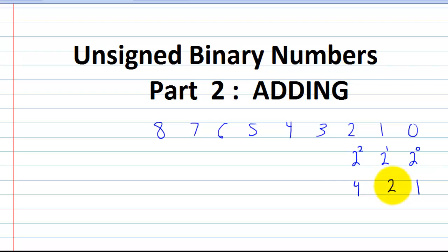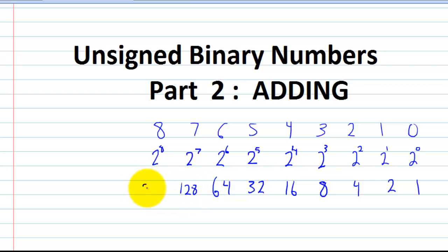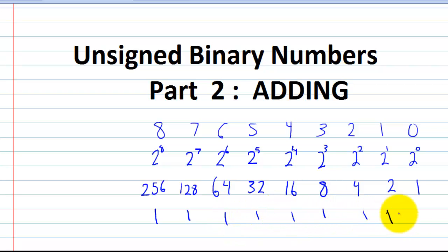Two is double the first one, four is double of that. Then you have two cubed, two to the fourth, two to the fifth, two to the sixth, two to the seventh, and two to the eighth power. You can put these into your calculator or just double from the previous value each time. If you had a binary number with eight ones, you just add those values together to find what number it represents. That's a quick recap of the previous video.